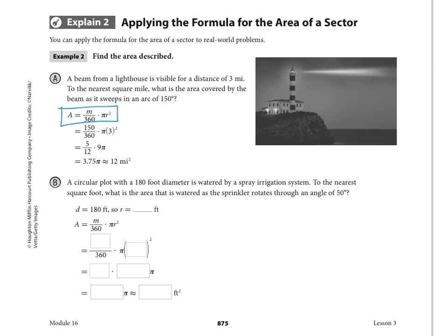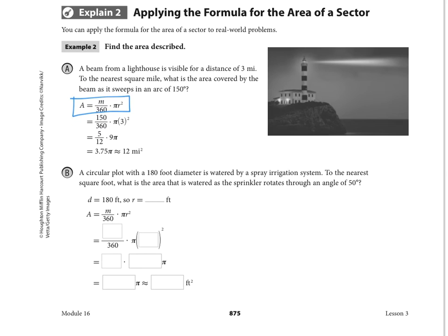As we look at this particular lighthouse picture, you can see that the beam is almost like a central angle itself. So if we're thinking about it rotating in a circle, the arc that it sweeps through is apparently 150 degrees.